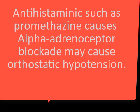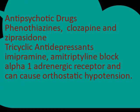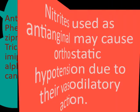Antihistaminics such as promethazine cause alpha-adrenoceptor blockade and may cause orthostatic hypotension. Similarly, antipsychotic drugs — phenothiazines, clozapine, and ziprasidone — and tricyclic antidepressants — imipramine and amitriptyline — block alpha-1-adrenergic receptors and can cause orthostatic hypotension.